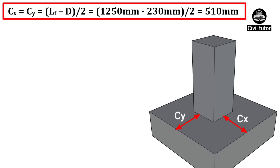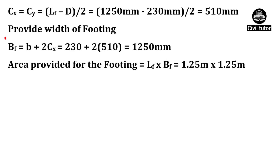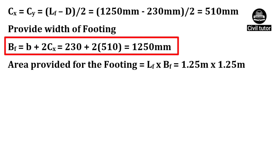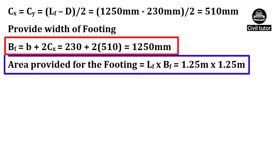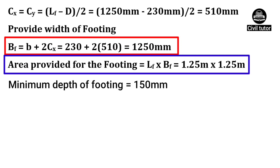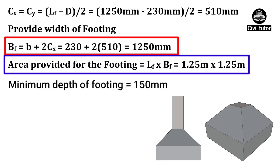Now, we need to calculate the width of footing, which is given by the formula: BF = B + 2·CX, where B is the width of column, already given as 230 mm, and CX is calculated as 510 mm. On substituting these values, the width of footing will be equal to 1250 mm. Hence, the area provided for the footing will be equal to LF × BF = 1.25 m × 1.25 m. It should be noted that the minimum depth of footing should be kept as 150 mm, and if possible, a trapezoidal cross section should always be preferred.